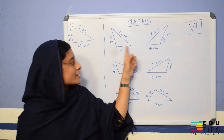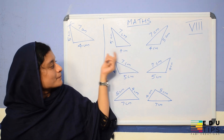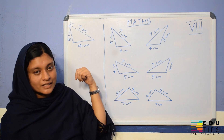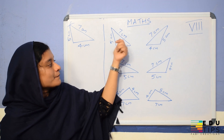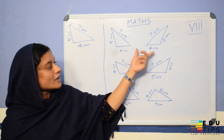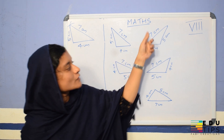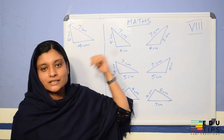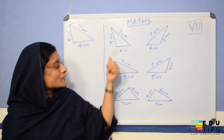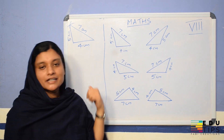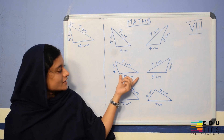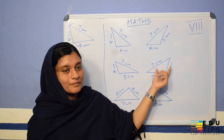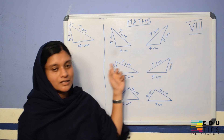You can see that the base is 4 cm, the left side is 5 cm, and the right side is 7 cm. Now we can also draw the triangle with base 7 cm and other two sides 4 cm and 5 cm, or with base 5 cm and other two sides 4 cm and 7 cm. So the bases and sides are changed.